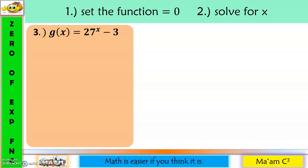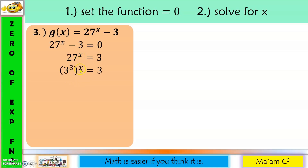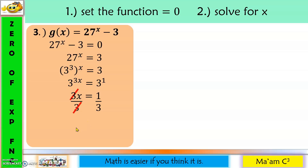Another example: equate the function equal to zero. Move negative three to the other side. Make the bases the same by expressing 27 as three cubed. Multiplying the exponents gives three raised to three x equals three raised to one. Now that the bases are the same, focus on the exponents: three x equals one. Divide both sides by three. So x equals one-third. Therefore, the zero of g of x is one-third.